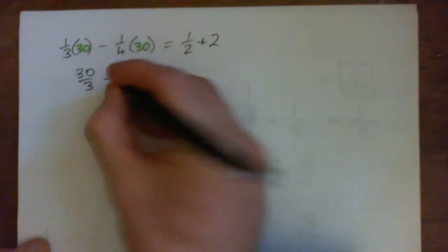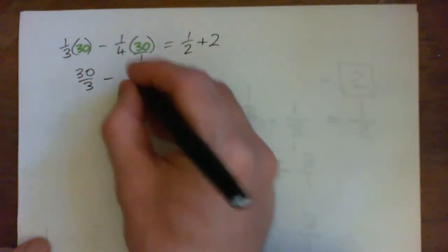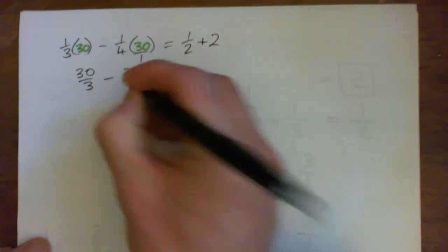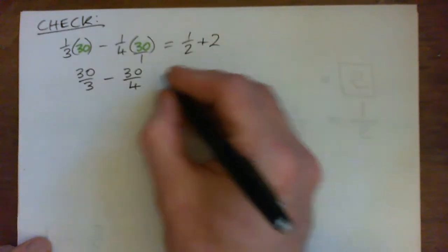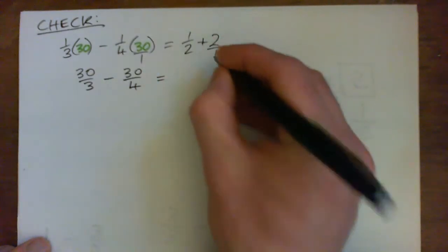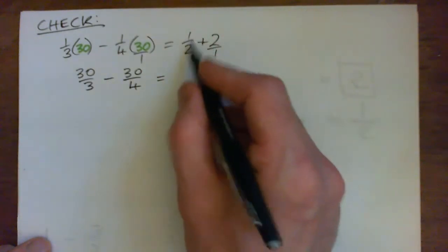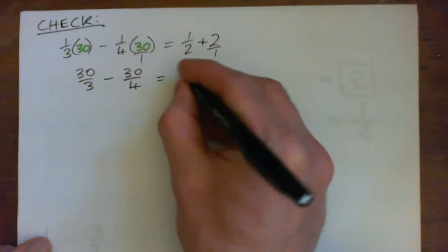We're just checking the answer here, and this would be a good thing to do if you're ever taking a test. Remember we did a half plus two and we ended up with five over two. Let's just leave that as five over two.